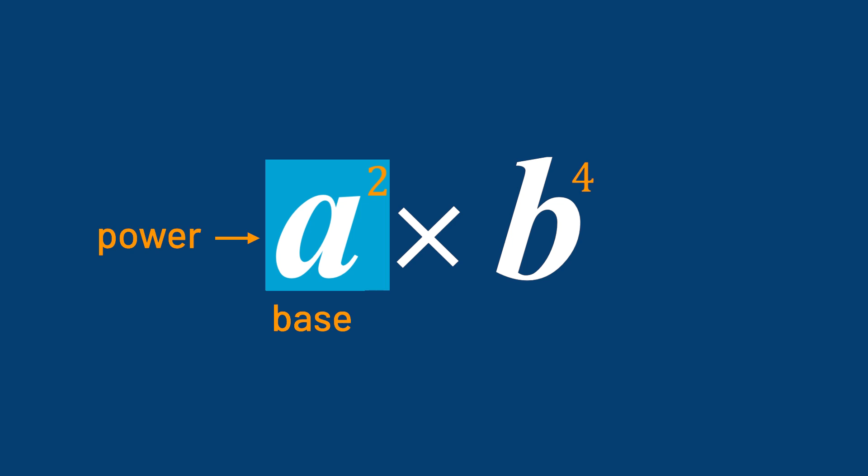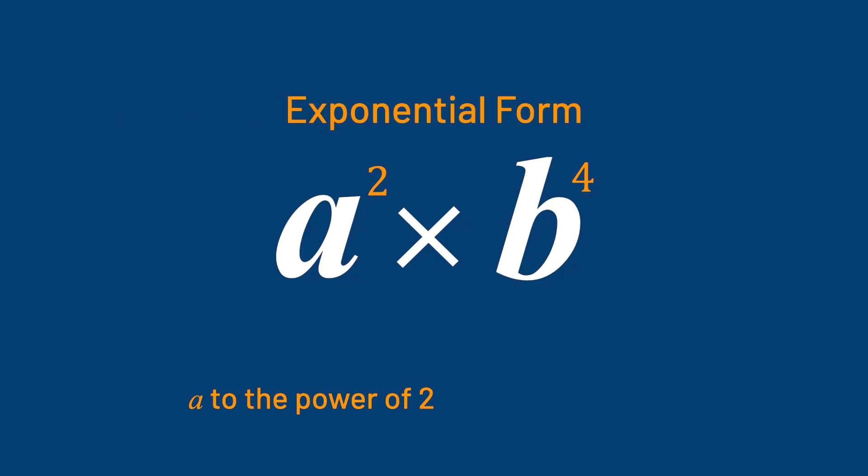We can say a to the power of two or a with exponent two. The more common way of saying this is a to the power of two. So, in exponential form, we write it as a to the power of two multiplied by b to the power of four. Grade 9s, this should look slightly familiar to what you did in Grade 8.